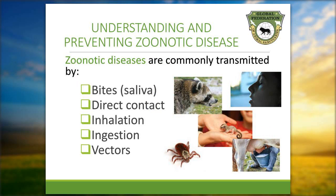Zoonotic diseases are transmitted from animals to humans in a number of ways. Some examples include diseases such as rabies that are contracted through the bite of an infected animal; scabies which can be contracted by direct contact with an animal that has sarcoptic mange; psittacosis which can be contracted by the inhalation of bird feces; brucellosis which can be contracted by ingesting unpasteurized milk or coming in contact with an infected fetus; and Lyme disease which is transmitted from animals to humans through the bite of a tick.